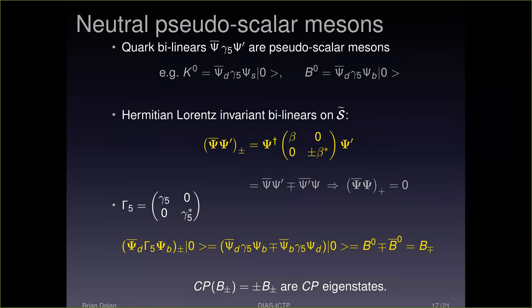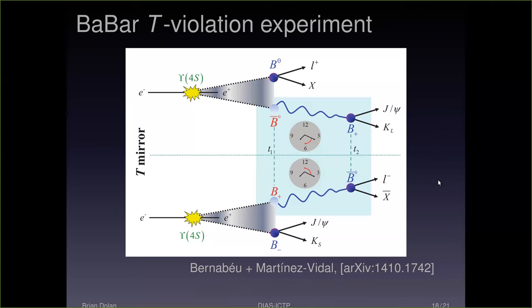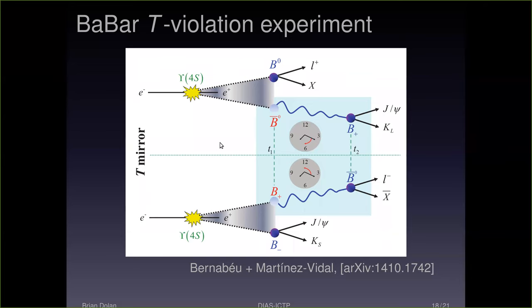The neutral B mesons are where T violation was definitively discovered in 2011 — it's a beautiful experiment. The idea is that in an electron-positron collider, if you produce an Upsilon, which is a B-B-bar neutral meson, it will decay to B mesons. The B quantum number for the Upsilon is zero because it's a B-B-bar. The B-B-bar can produce a neutral B meson with a down quark, and the B-bar can produce an anti-B-naught.